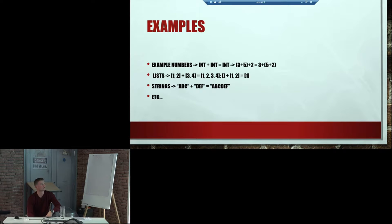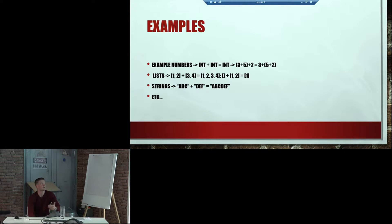And there are lots of other examples which represent monoids in real life as well, like lists and strings — you can combine them. There is a neutral element, for example, an empty string. In lists, a neutral element is an empty list, and numbers, which I have already shown you. And there are lots of examples which represent the same basic idea.